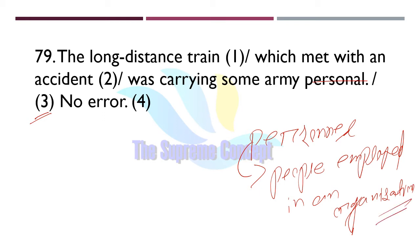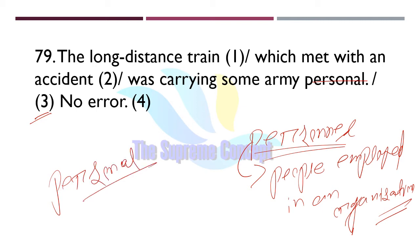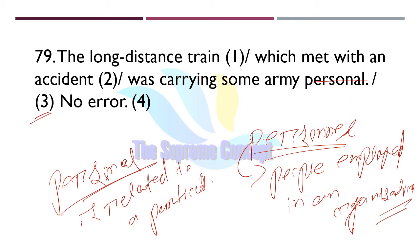We often see 'personnel' in news — for example, 'army personnel'. Meanwhile, 'personal' — P-E-R-S-O-N-A-L — is related to a particular person, as in 'this is my personal opinion'. So 'personnel' and 'personal' are two different words.